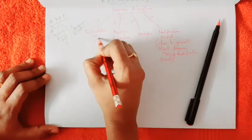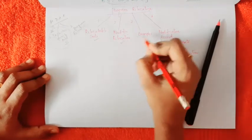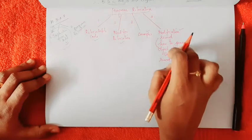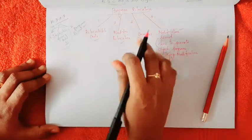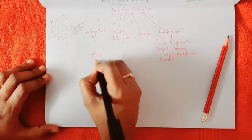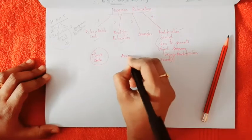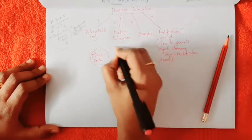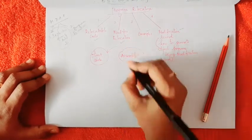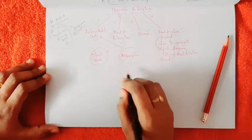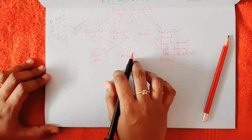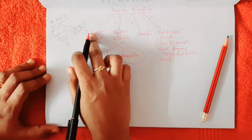In program relocation, we will study relocatable code, the need for relocation, and some examples. We will also study the modification record and how to generate an object program using this modification record. As we know, object code is generated by the assembler. But if the assembler does not know where the object code is loaded into memory, it generates a code called relocatable code.